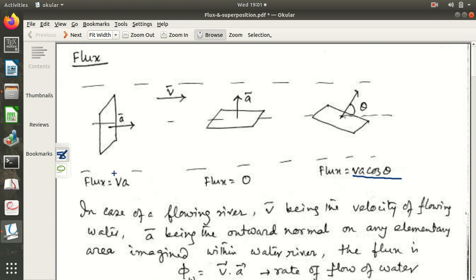So, now we consider an area, an elementary area and this area is indicated by an outward normal on that area. So, the outward normal here is denoted by A. This is a vector quantity. So that is why the mark above A. This should be an arrow.